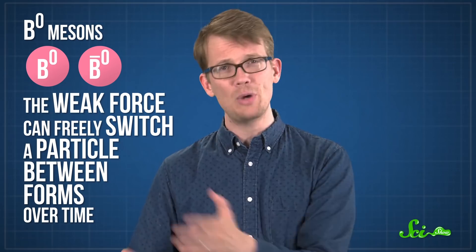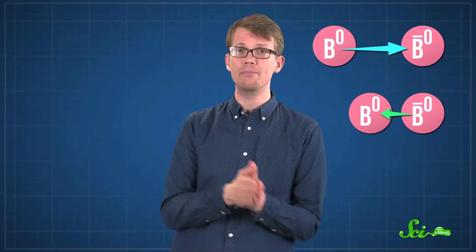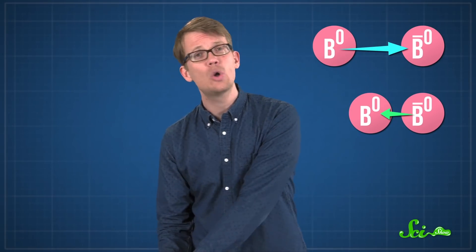There are particles called B0 mesons that throw a wrench in things. They can exist in two forms, called B0 and anti-B0. And the weak force can freely switch a particle between forms over time. Switching in either direction should be the same. But switching from B0 to anti-B0 actually takes longer than going the other direction. The weak force's effects are therefore the only ones that depend on the direction of time too.